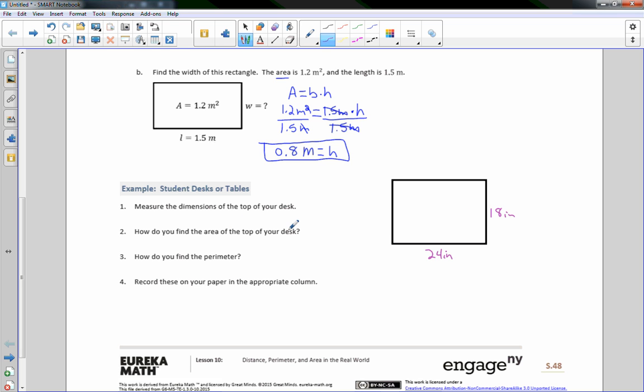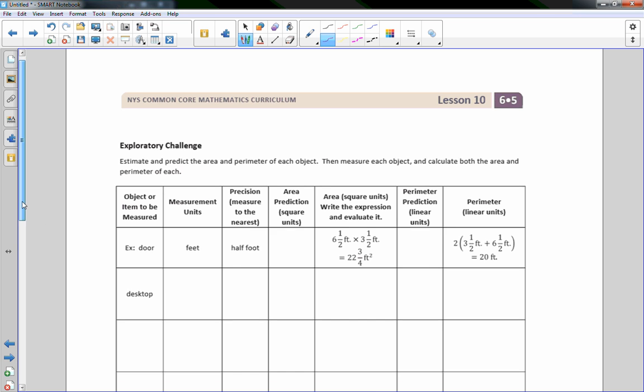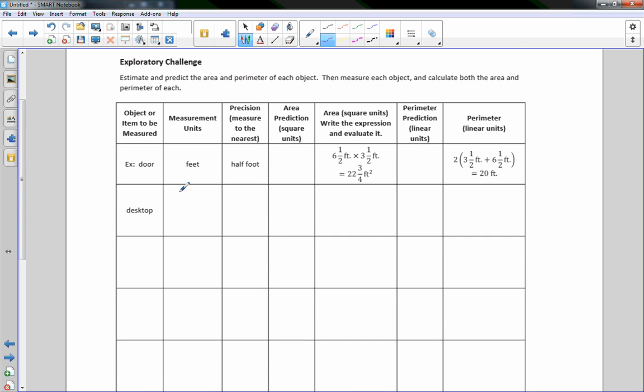How do you find the area of the top of your desk? Well, the area equals the base times the height. And how do you find the perimeter? Well, perimeter equals 2L plus 2W. Record these on your paper in the appropriate column. So there must be a paper back here. Ah, desktop. Okay, measurement unit, feet. Measure to the nearest half foot is good.